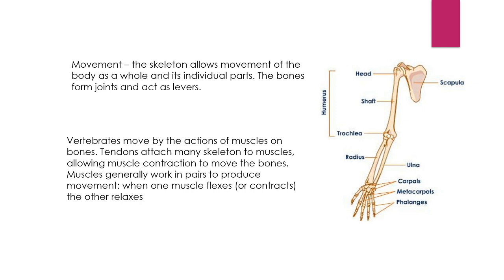Vertebrates move by the actions of muscles and bones. Bones alone cannot help us in movement — muscles are also required for movement. Tendons attach the skeleton to muscles, allowing muscle contraction to move the bones. Muscles generally work in pairs to produce movement.